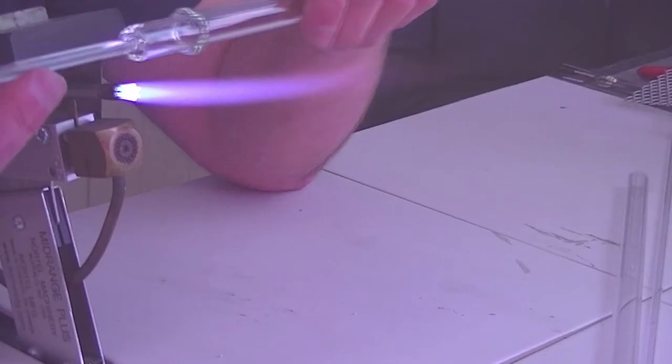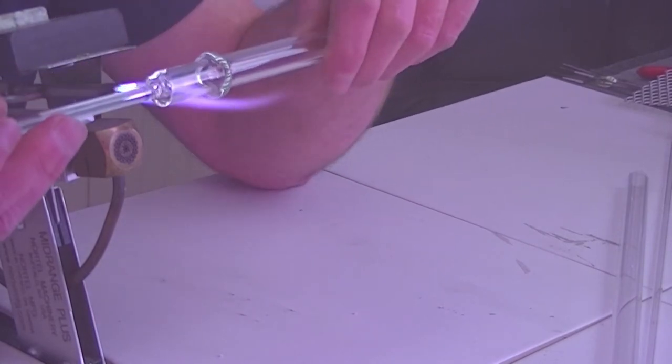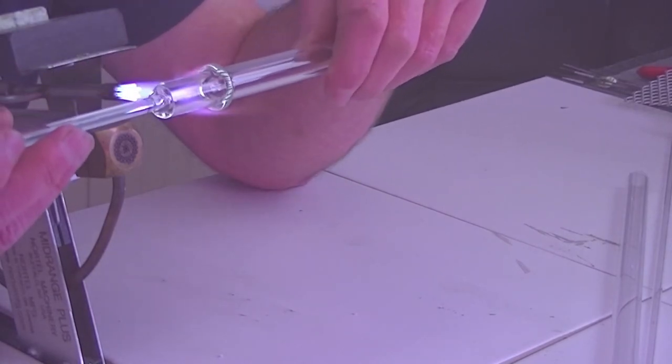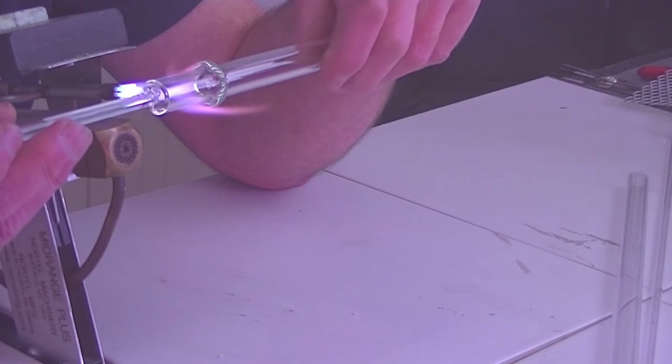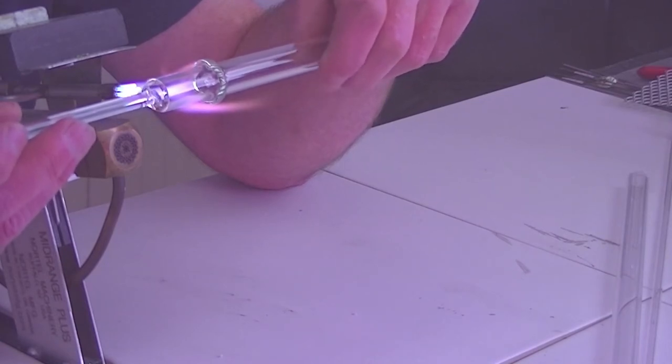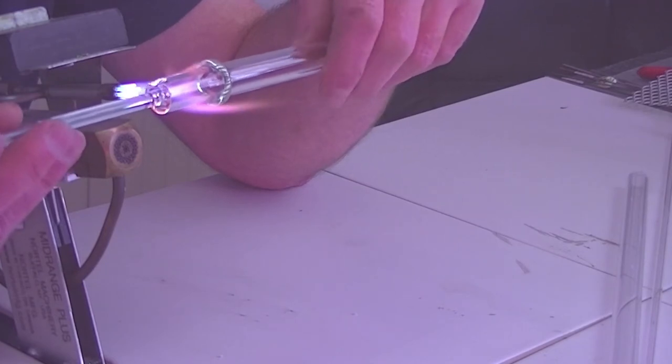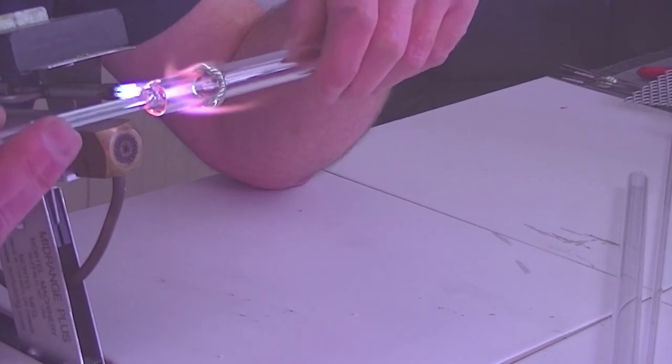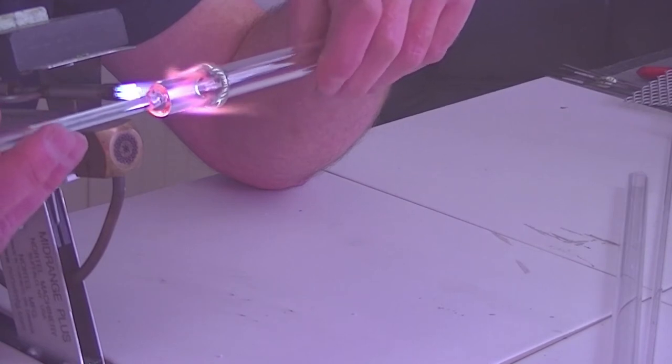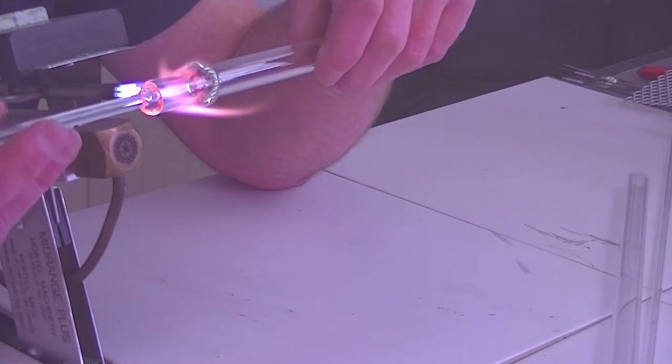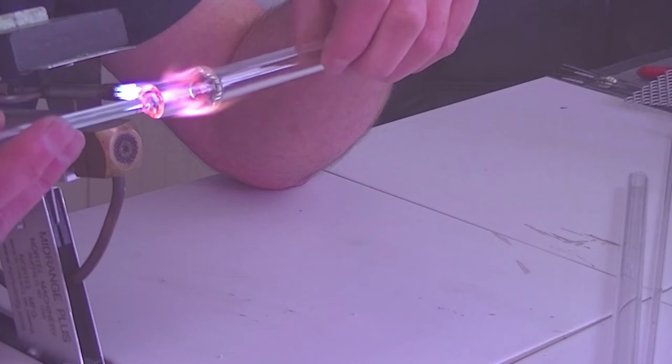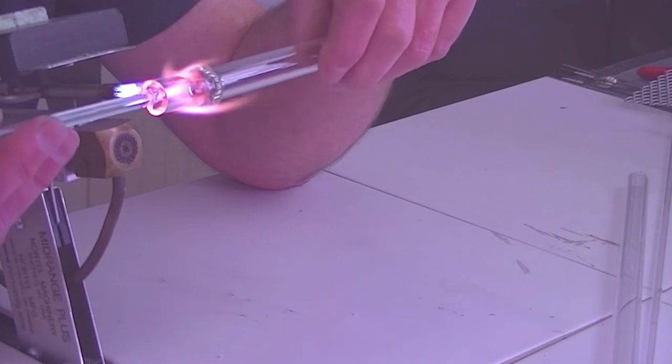And then going back just after that flange, now start to heat it, and we're going to shrink this down, and this becomes the neck of the oil lamp. Just let the flame do the work for you, you don't need to worry about pulling it off, because you want to try and keep it quite a thick wall as it comes down.